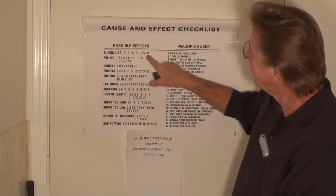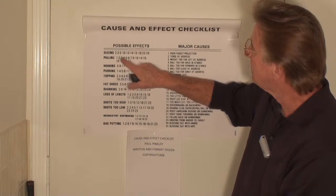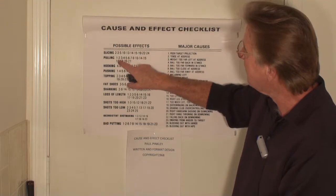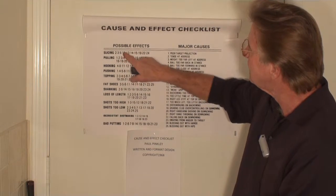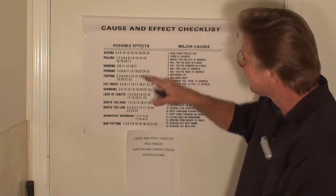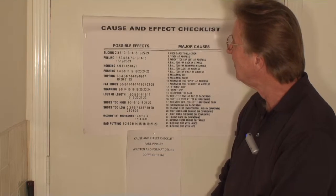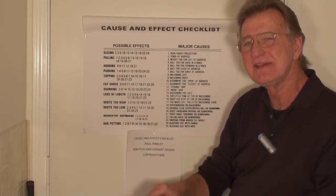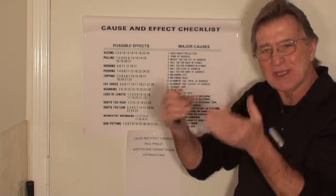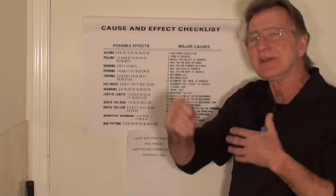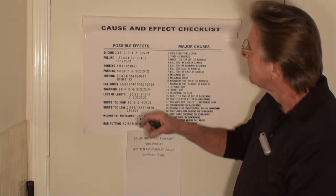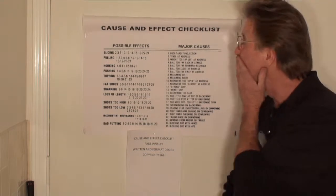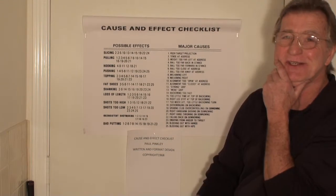And looking at it a little closer, I'm saying to myself, well, what happens if it's one-tenth of each one of these 10 different possible causes? Whoa. Well, that means in order to cure my slicing, there is potentially a combination of 10 to the 10th power. Whoa — 10 to the 10th power.